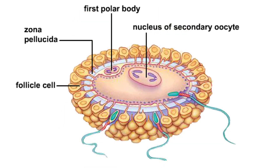Recall that ovulation released a secondary oocyte and first polar body enclosed within a noncellular zona pellucida and remnants of the follicle. If sperm meet up with such an oocyte, they surround it and release digestive enzymes that clear a path through the zona pellucida. Although many sperm get this far, usually only one penetrates the secondary oocyte.